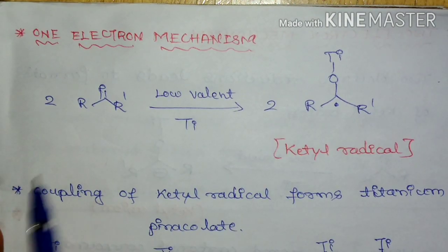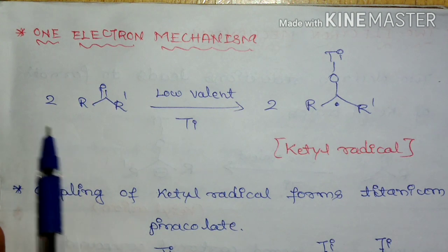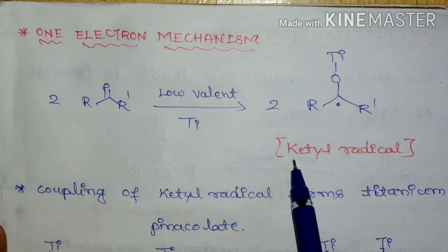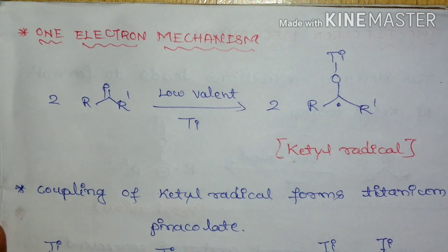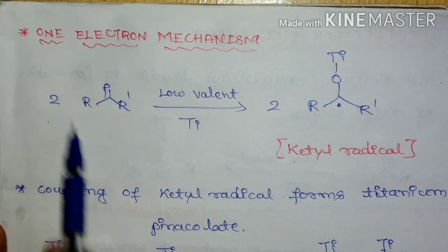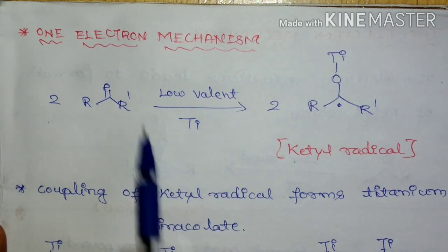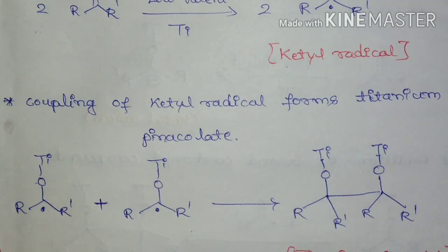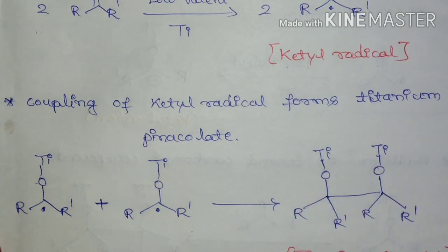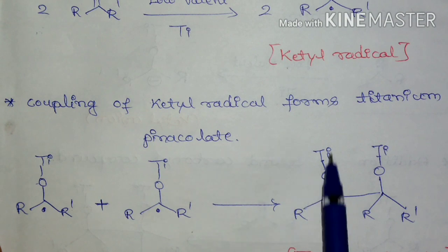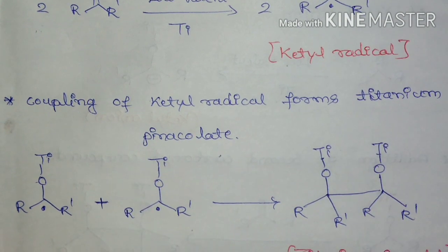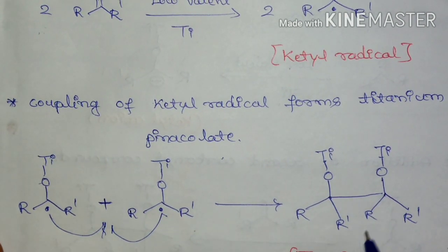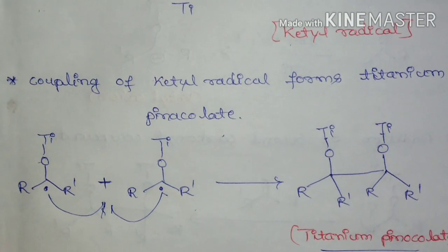First we will see the one-electron mechanism. Here, two equivalents of carbonyl group will undergo single-electron reduction with low-valent titanium, and it is going to form a ketyl radical. In the next step, the ketyl radicals formed will undergo coupling reaction, and it leads to the formation of titanium pinacolate. So two ketyl radicals combine and lead to the formation of titanium pinacolate.